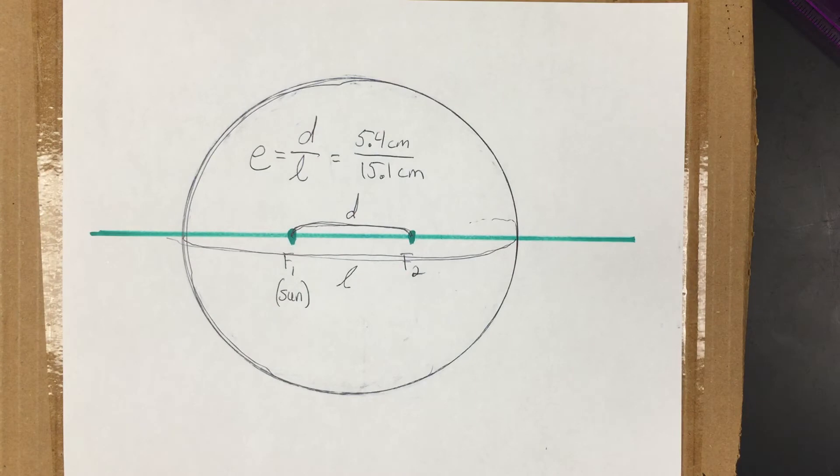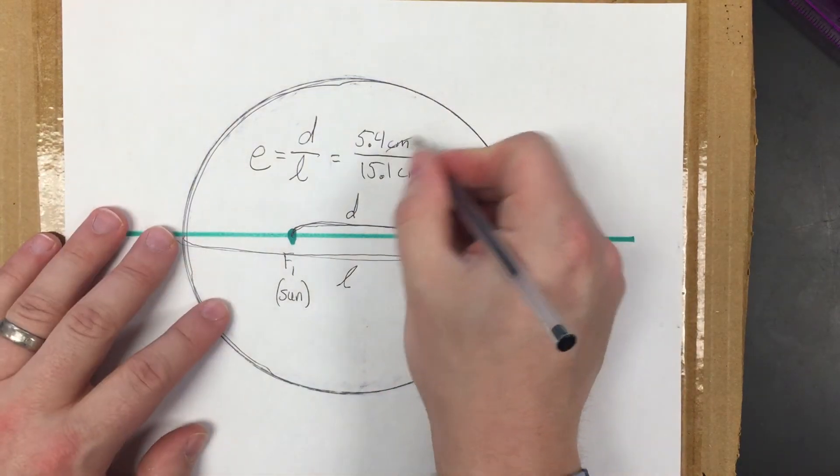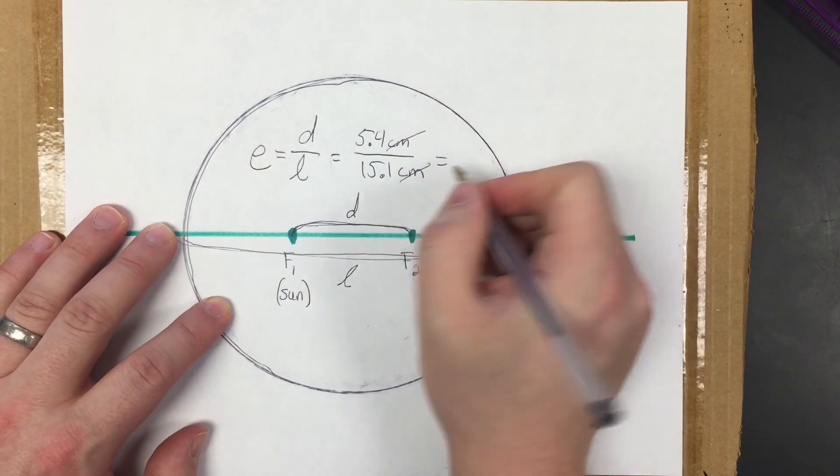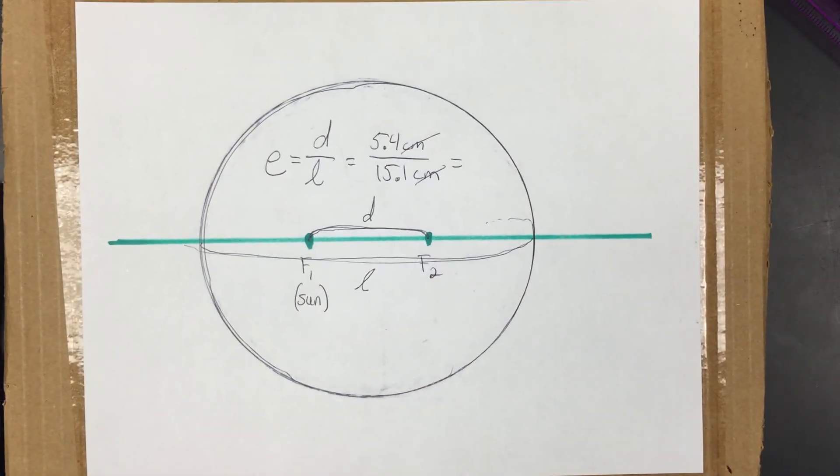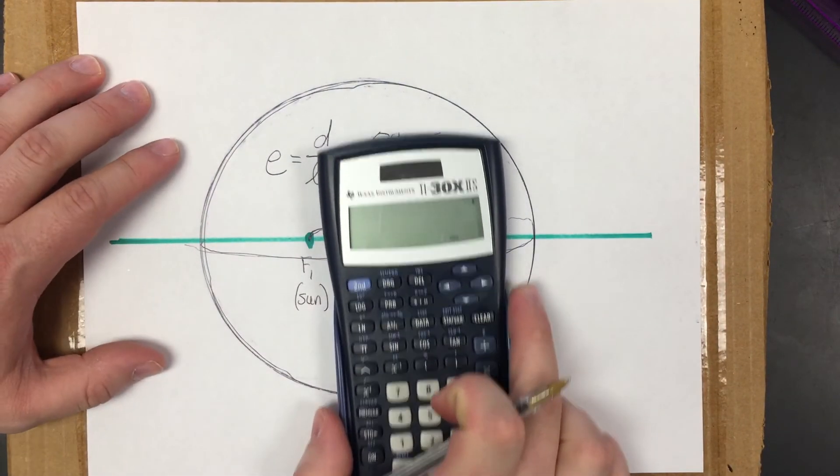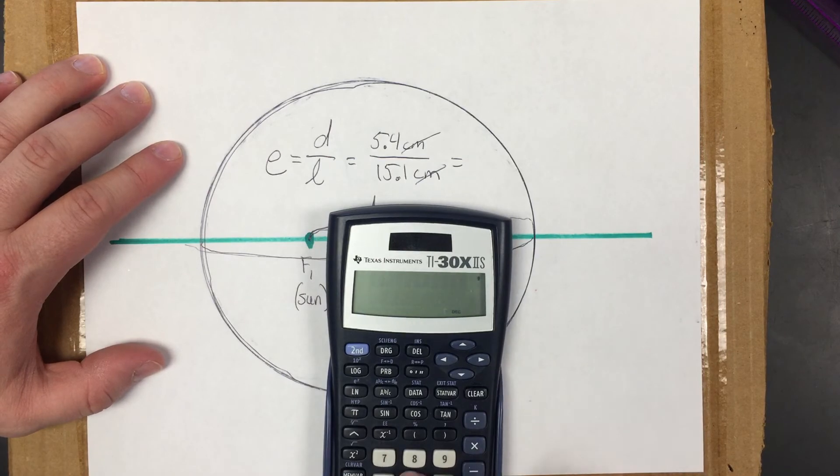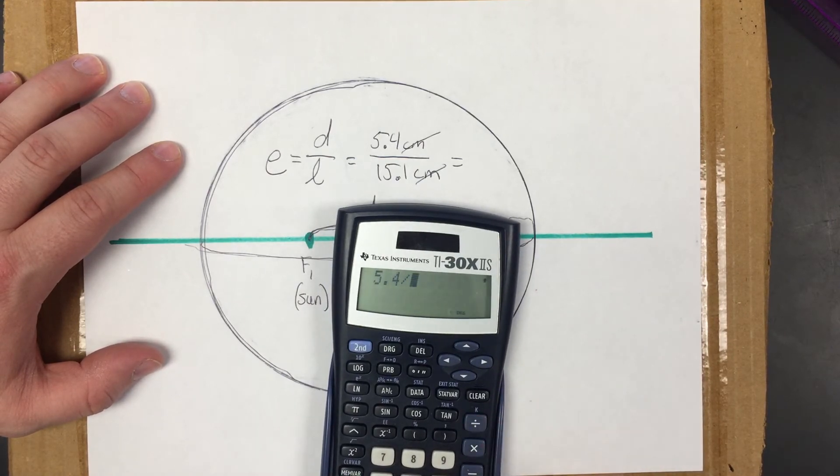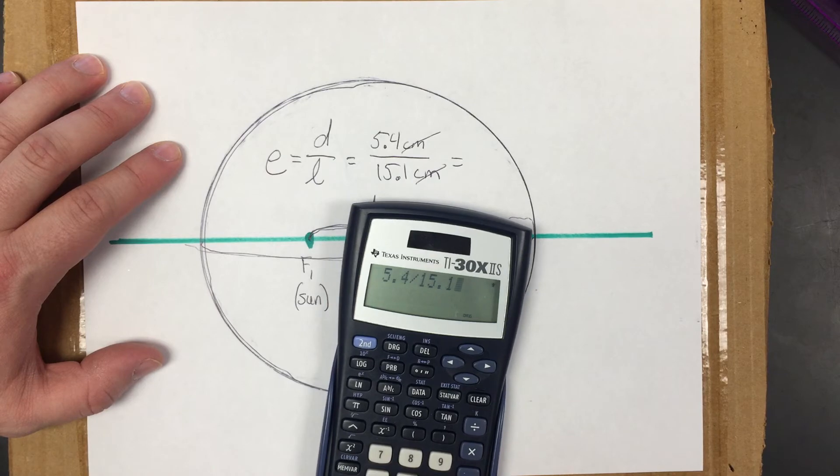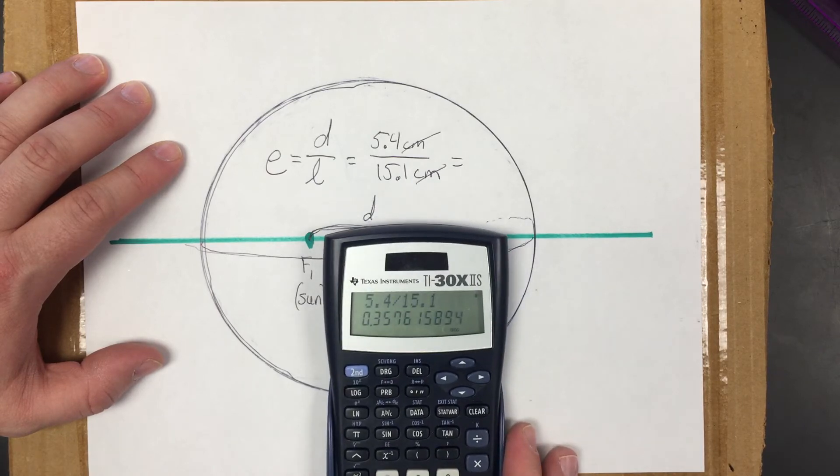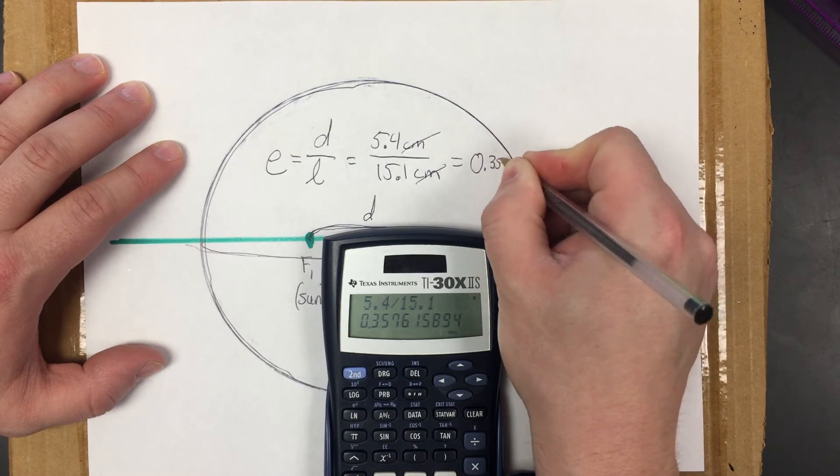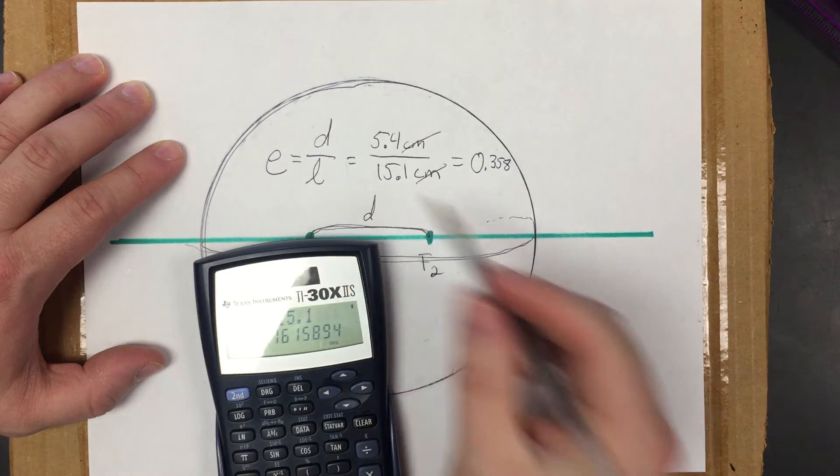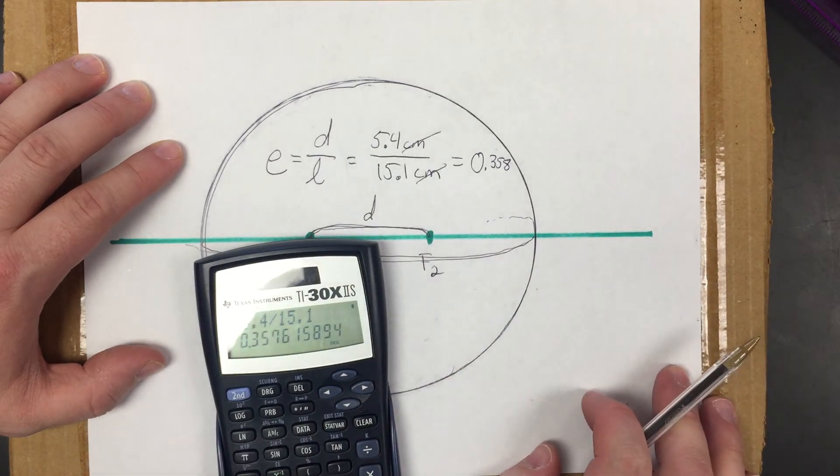So my next step is, first of all, my units are going to cancel. Centimeters and centimeters cancel. My eccentricity is a naked number that I always want to round to three decimal places. If I actually do the division here, I will get 5.4 divided by 15.1, and round that to three decimal places and I would get 0.358. Okay, so eccentricity E equals 0.358.